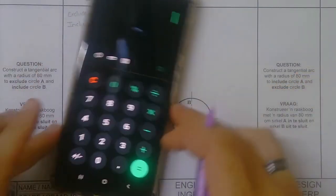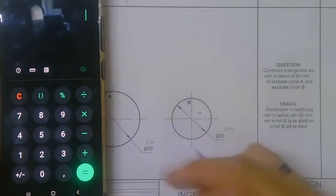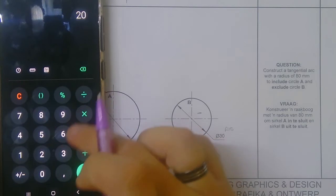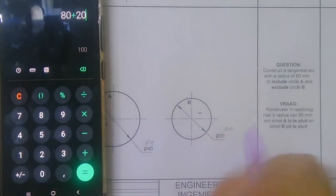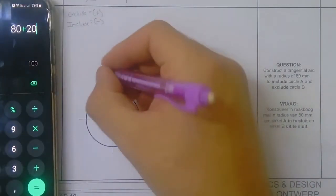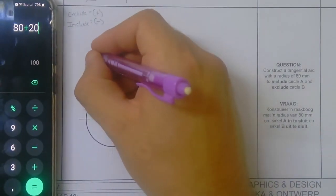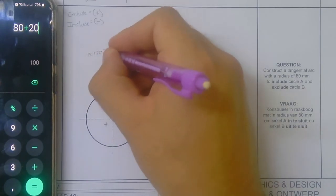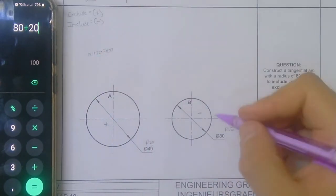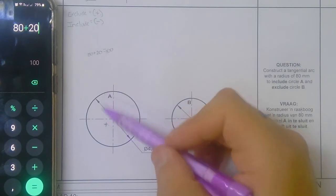So 20 plus—wait, let's take 80. So it's 80 plus the 20, we get 100. So then this one is 100. Remember to write that down here: 80 plus 20 equals 100. And that was our exclude circle.